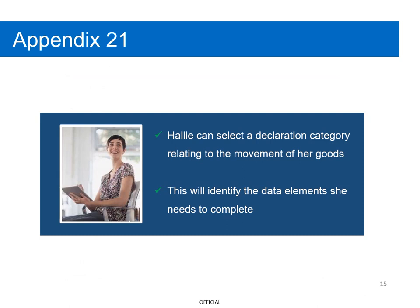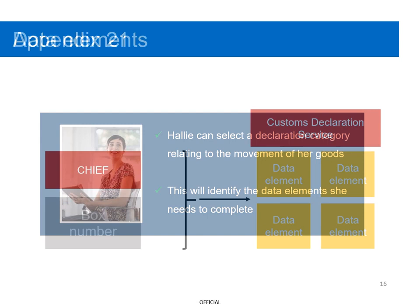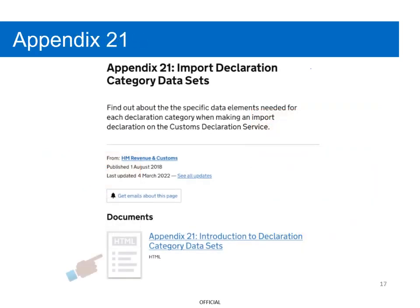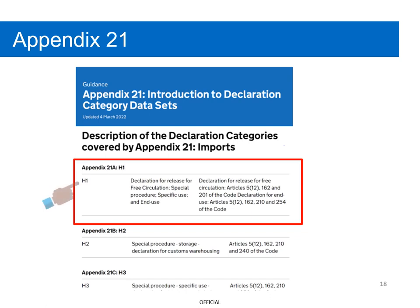The link will open Appendix 21 – Introduction to Declaration Category Datasets guidance. Hallie can then select a declaration category relating to the movement of her goods. In turn, this will identify the data elements she needs to complete on her import declaration. The Customs Declaration Service requires completion of data elements which replace the boxes on the Customs Handling of Import and Export Freight, or CHIEF system. Hallie selects Appendix 21 and scrolls down to find the description of the declaration category.